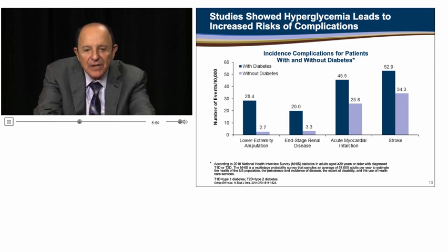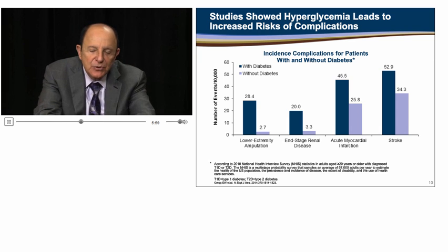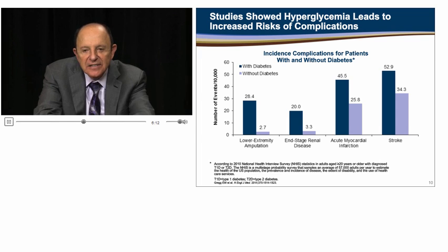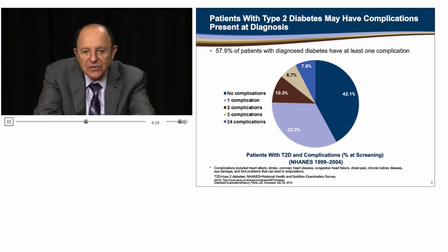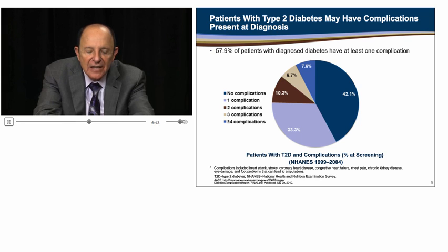Let's now take a look at some of the complications associated with hyperglycemia based on recent national surveys. Individuals with type 2 diabetes have an increased risk of both microvascular and macrovascular complications. The relative risk of lower extremity amputation was 10.5-fold, end-stage renal disease 6.1-fold, acute myocardial infarction 1.8-fold, and stroke 1.5-fold increased. Even at the time of diagnosis, complications are present in many type 2 diabetic patients. According to a 2007 report by the American Association of Clinical Endocrinologists, based on NHANES data from 1999 to 2007, the majority of patients had one or more complications at the time of screening, demonstrating the harmful effects of hyperglycemia.